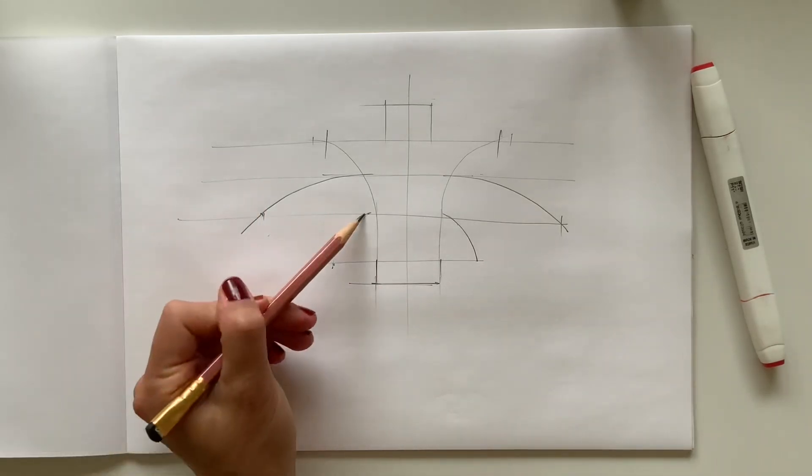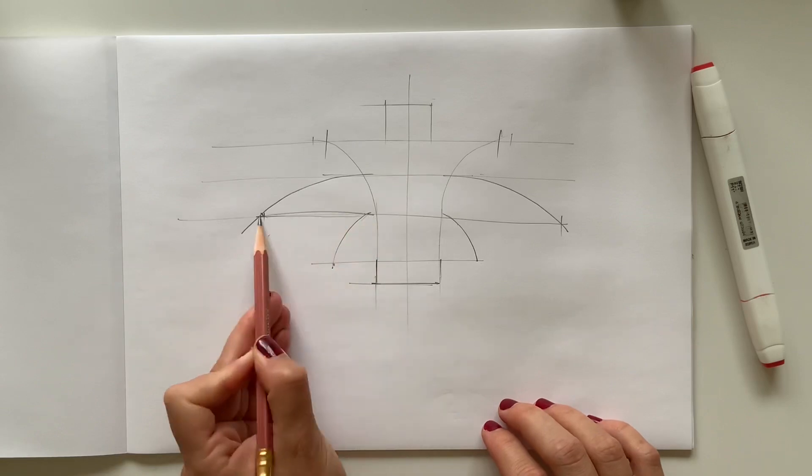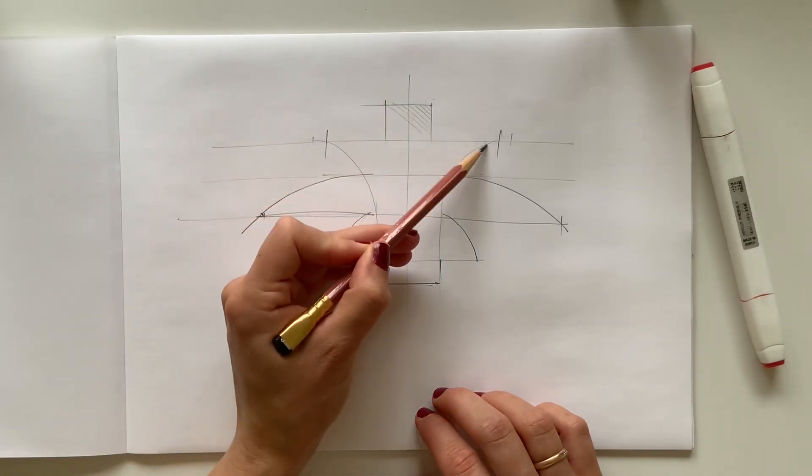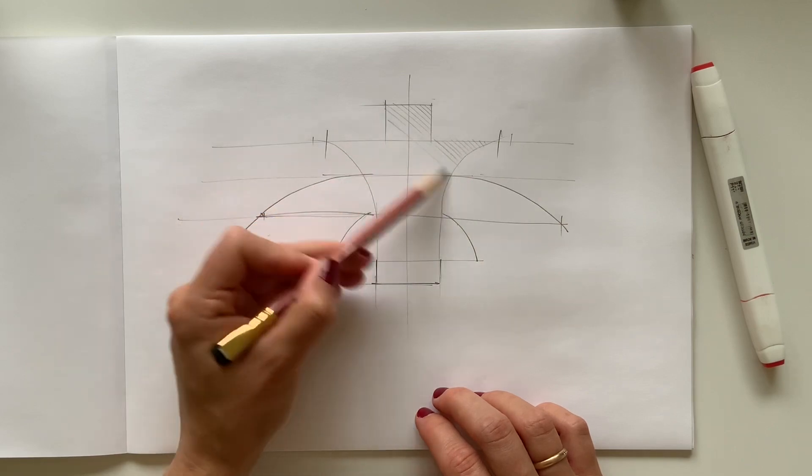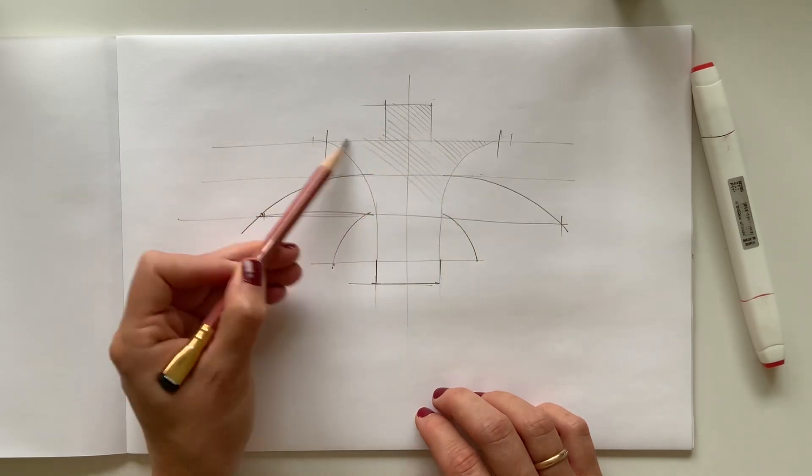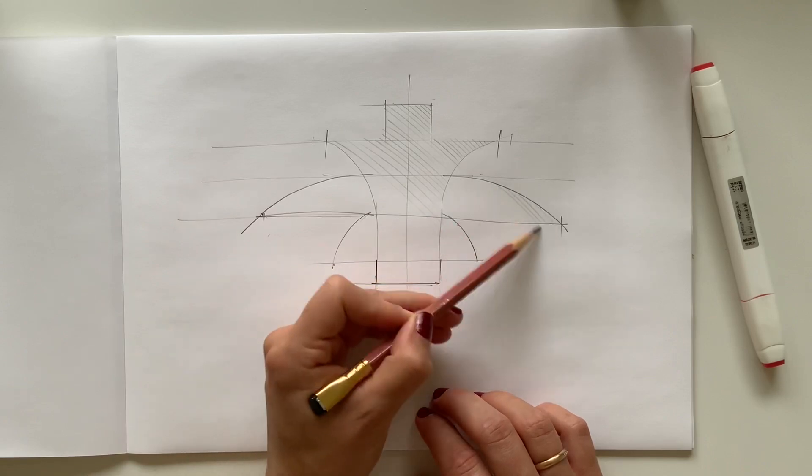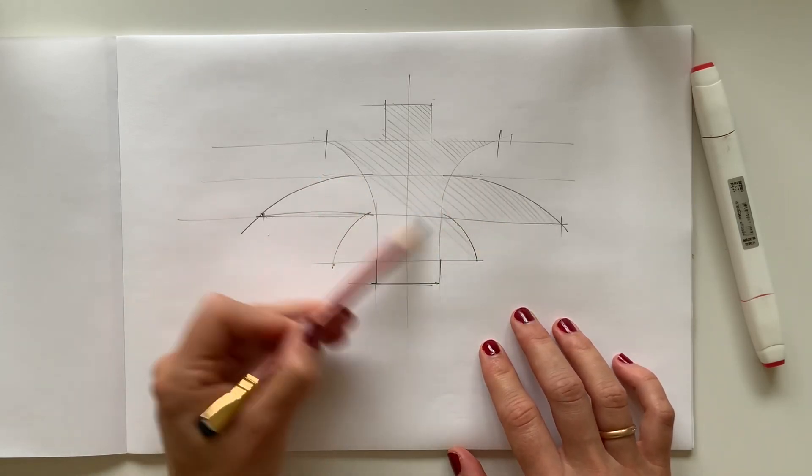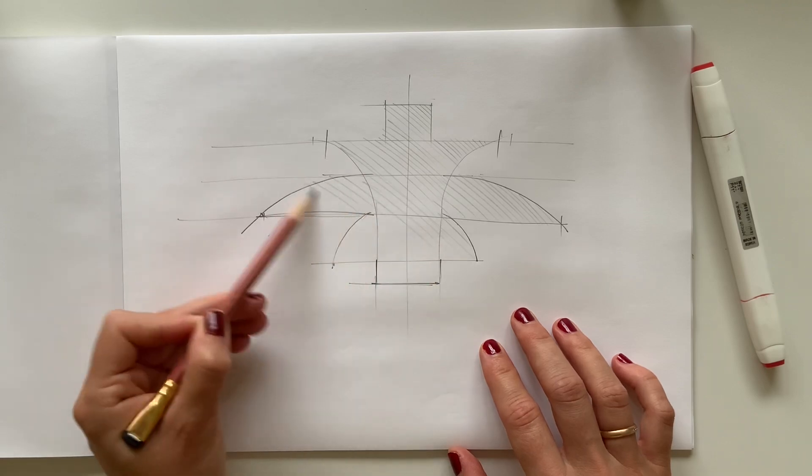But what I want you to do now is to make a hatching of the inside form and now we are going to draw it a little bit faster. So as you can see now we use some guidelines to help us with the proportions.